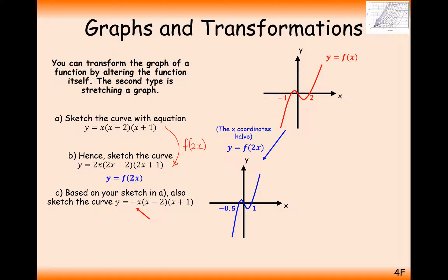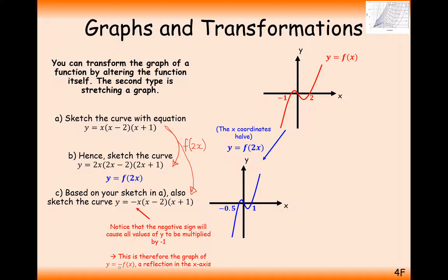Now let's look at question C. We have a negative in front of the original f of x function. This stretches upwards and downwards from a centre of stretching at the x-axis. But if our stretching is a factor of minus 1, then a y-coordinate of 2 becomes minus 2. So it's effectively going to get reflected over the x-axis — this is the transformation y equals minus f of x, which has a reflection in the x-axis.